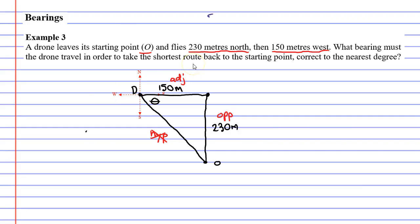So looking at our acronym SOH CAH TOA, we just need our adjacent and our opposite, so we're just going to use the last part of our acronym. Opposite and adjacent. So we're using TAN.